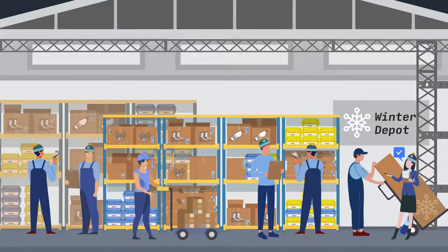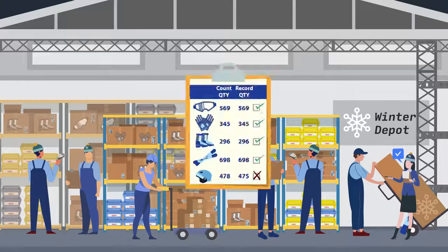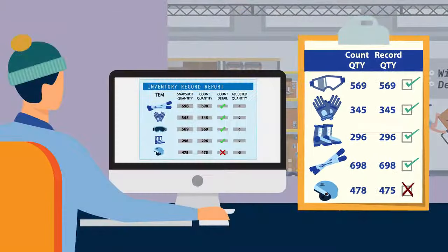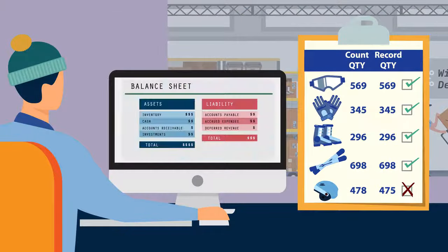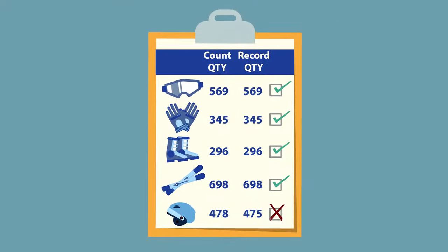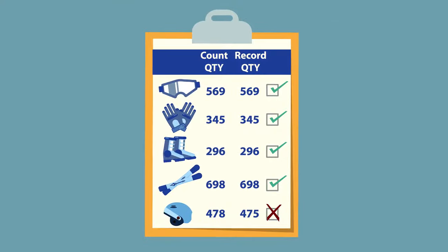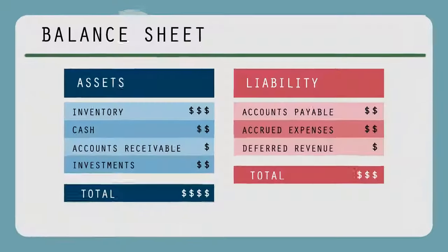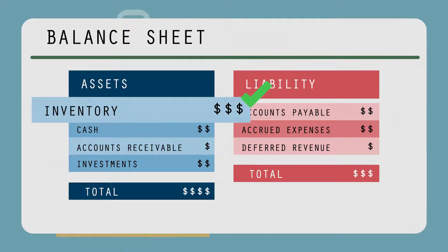A physical inventory count is a structured approach to counting every piece of a company's inventory. Physical counts are used to ensure inventory records and financial statements are accurate. In fact, physical counts are often mandated by financial accounting rules and tax regulations to verify inventory is correctly valued on the balance sheet.